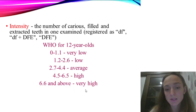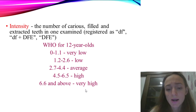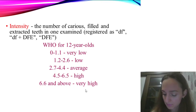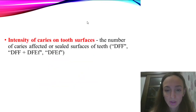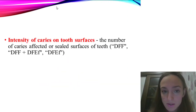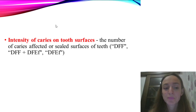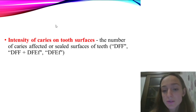The intensity levels for 12-year-olds are: very low, low, average, high, and very high based on the point scale. The next indicator is intensity of caries on tooth surfaces — it is the number of carious-affected or sealed surfaces of teeth.